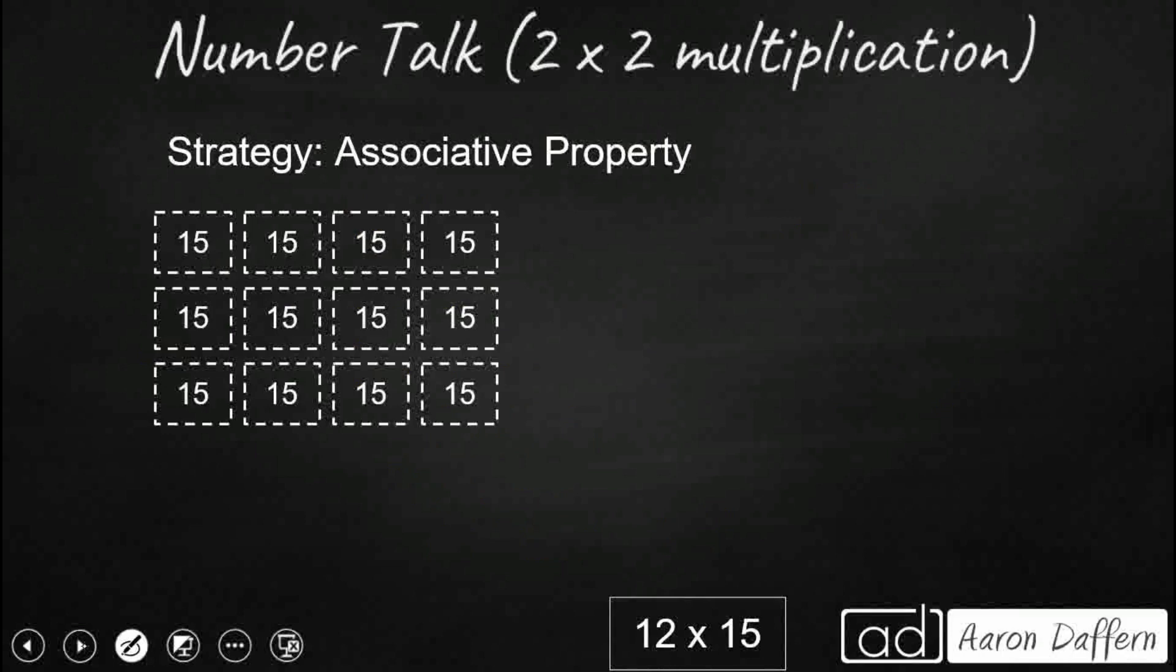So let's look at the associative property. Now this is a property we haven't seen. This is the grouping property. So what this associative property does is this lets us group our factors in a different way. So we are going to take this 12 times 15 and we're going to say, you know what, that 12 is really 3 times 4. And it's different than the distributive property because we're not going to add anything. We're just going to keep it as three factors we're multiplying. So it's really 3 times 4 times 15.